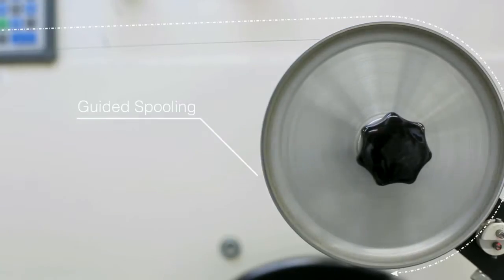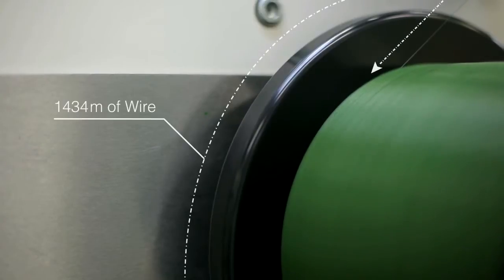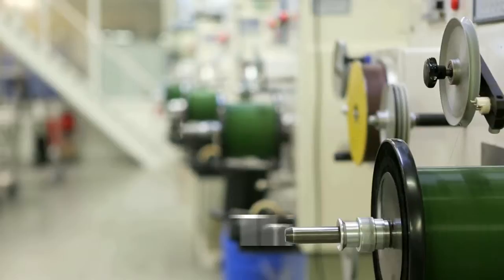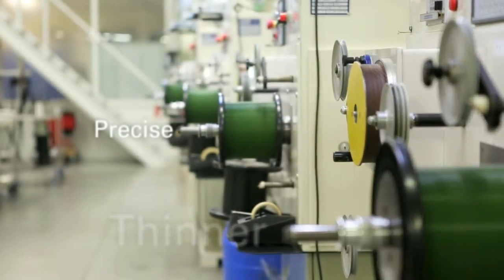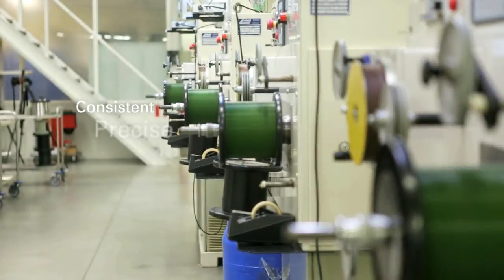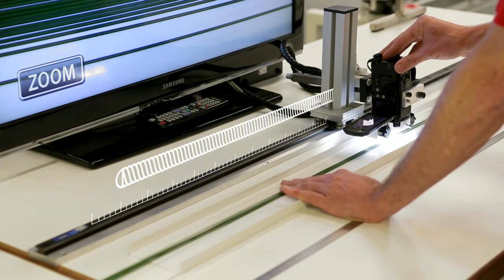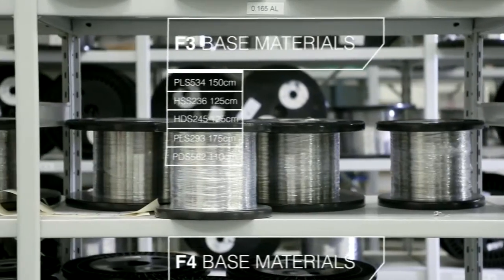The Merit Medical difference starts with proprietary spool-to-spool continuous coating technology, working together with advanced materials to apply coatings that are thinner, more precise, and more consistent than any spray or dip coating method, and a curing process that has limited impact on the mechanical properties of most base materials.